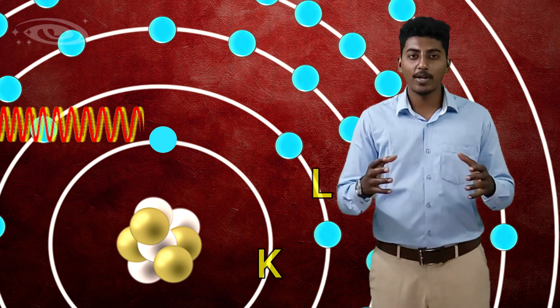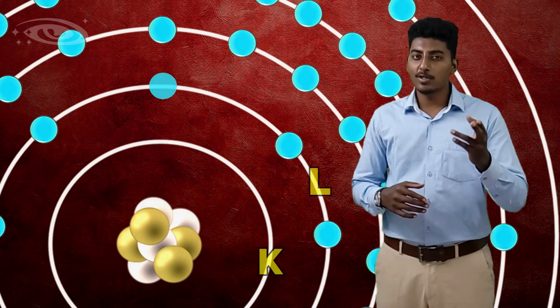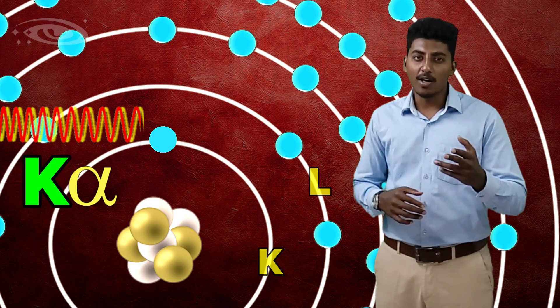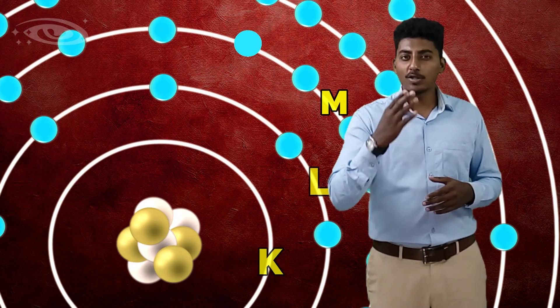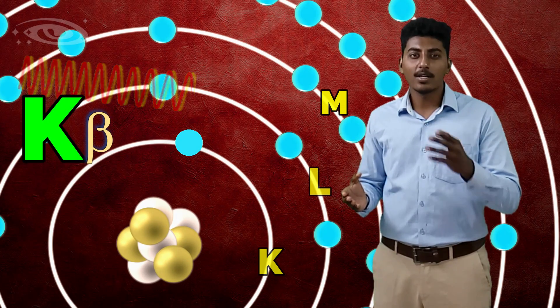This is how characteristic x-rays are propagated. When L-shell electrons drop down to fill the K-shell, it is known as K-alpha. If M-shell electrons drop down to fill the K-shell vacancy, it is known as K-beta.